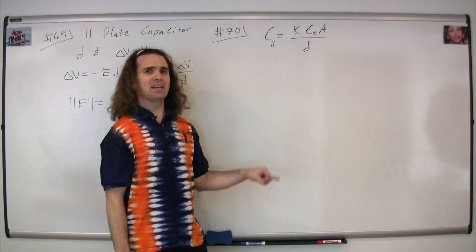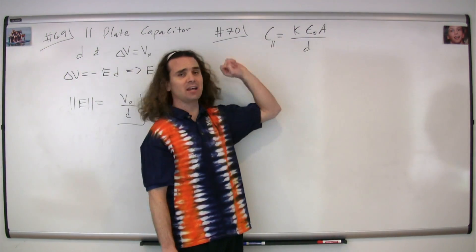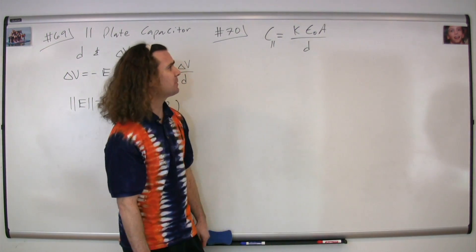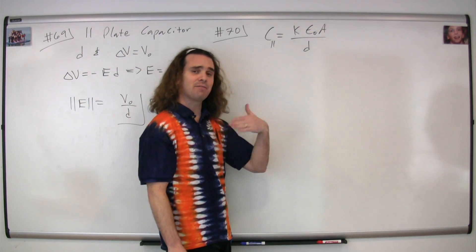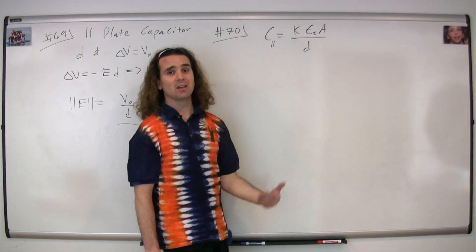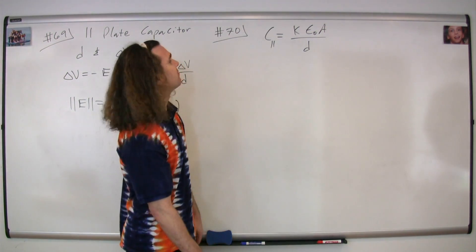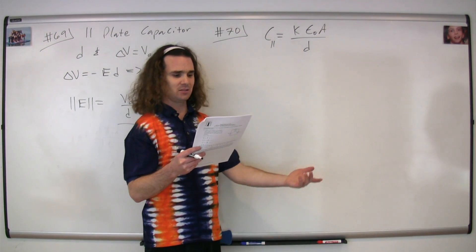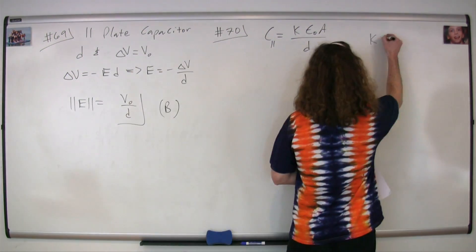The capacitance of a parallel plate capacitor is the dielectric constant times the permittivity of free space times the area of one of the plates divided by the plate separation. The dielectric constant of the plastic insulating material by definition has to be greater than one.